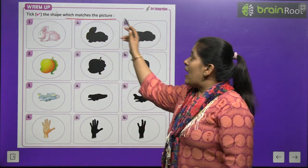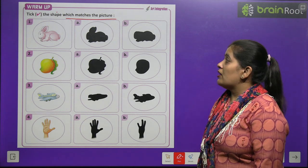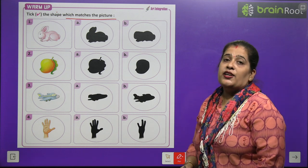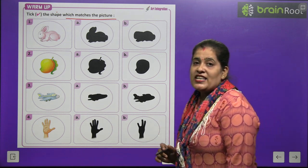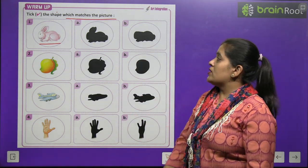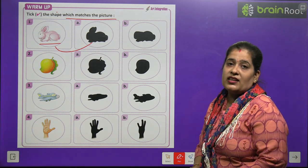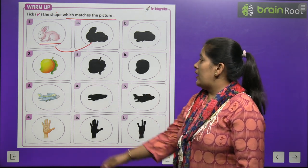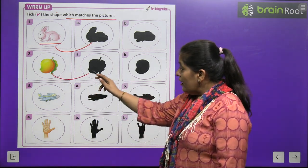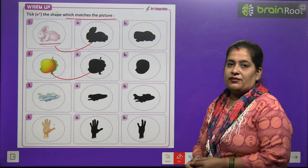Tick the shape which matches the picture. Yahaan pe kuch pictures di hui hain aur doosri taraf unki shapes hain — hum unhe shadows bhi keh sakte hain. Aapko match karna hai jo sahi shape hai. Pehli picture hai rabbit. Rabbit ki shadow A number par hai. Second picture is of mango. Mango ko hum match kareenge number A se. Number three and four you will do by yourself.